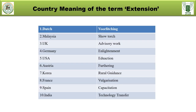Coming to the literal meaning of the term 'extension' in India and different countries: in Dutch, extension means 'voorlichting,' which literally means lighting the lamp for the benefit of the common man — showing him the way and direction to move. In Malaysia, extension means showing the torch. In the UK, it is advisory work. In Germany, extension means 'enlightenment' — when you are loaded with appropriate technology and information, you change your behavior, which is enlightenment. In the USA, extension means education — both concepts emphasize change in behavior.